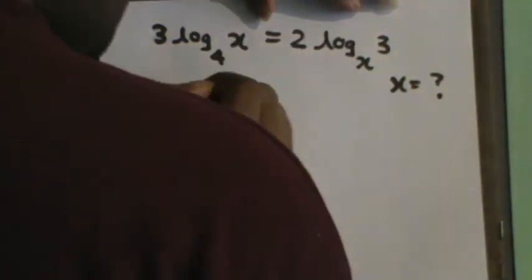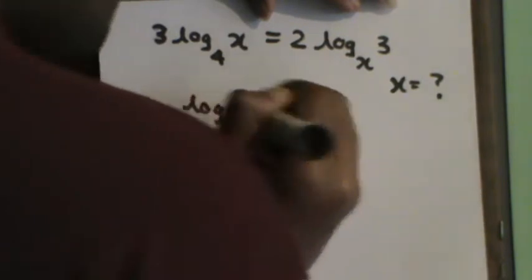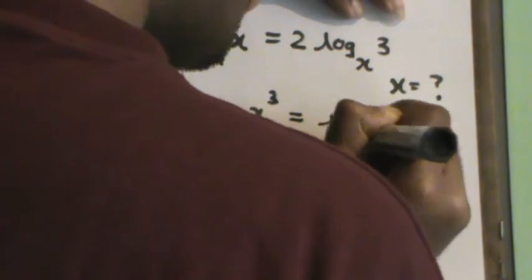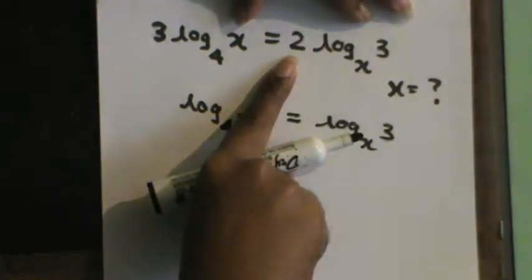To eliminate the coefficients, I'll write the left side as log 4 to the base x³ — the 3 becomes the power of x. Similarly, the right side becomes log x to the base 3², which simplifies to log x to the base 9.